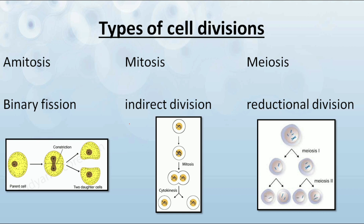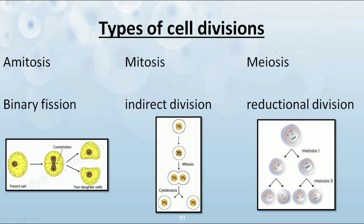Now let's discuss the various types of cell division. Within the cell cycle there occurs division of the cell. We majorly have three types of cell divisions: the first one is amitotic, the second one is mitotic, and the third one is meiotic. We will discuss mitosis and meiosis in detail with their various sub-stages in further lectures, but let's have a quick introduction to each one of them.